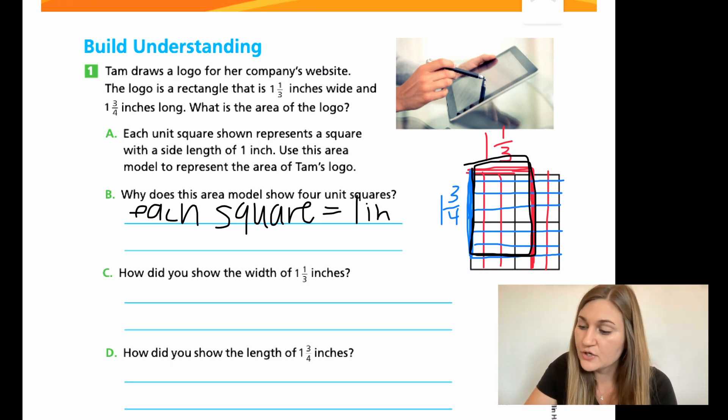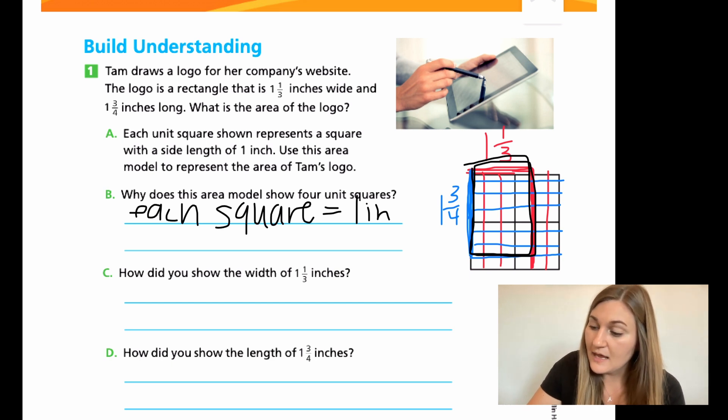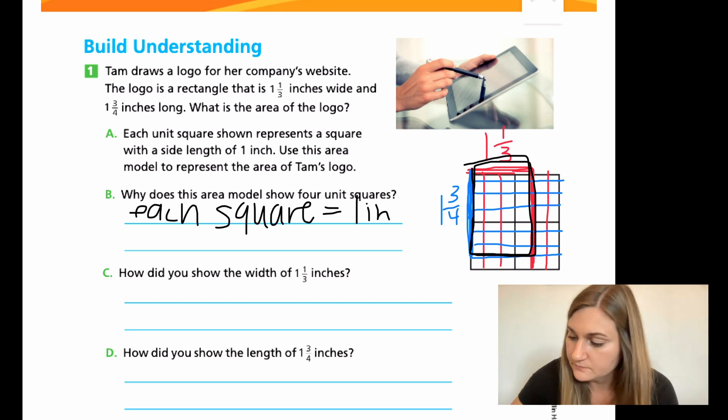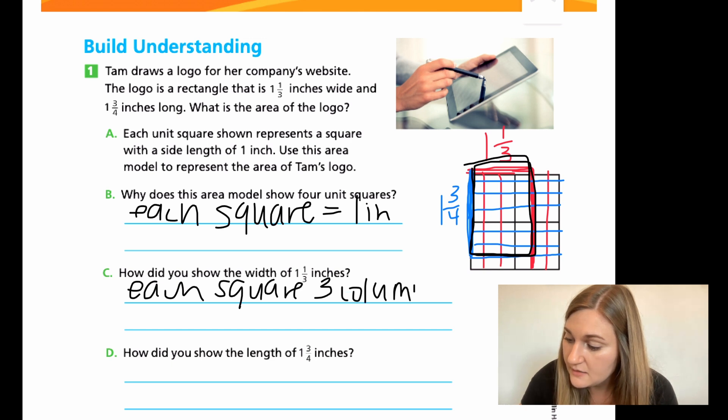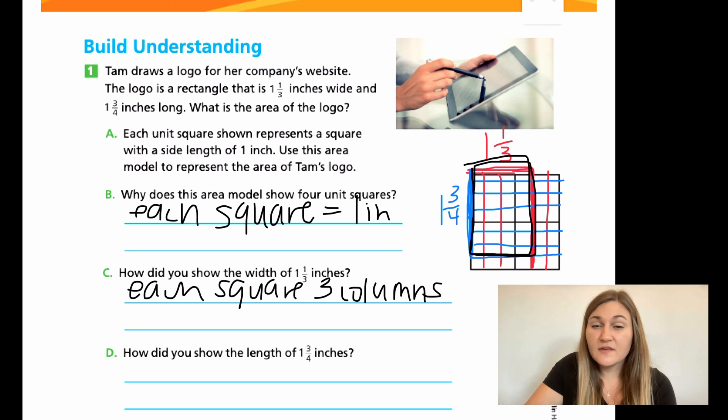Alright, so for C, how do you show the width of 1 and 1/3 inches? Well, I made 3 columns in each square. So each square had 3 columns and that was decided by my denominator of 3. And then I know if I made it an improper fraction, it would be 3 times 1 is 3 plus 1 is 4. So there's 4 of those 1/3s. So I shaded in 4 columns.